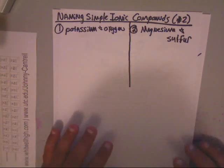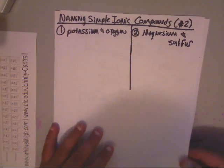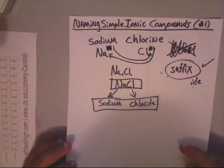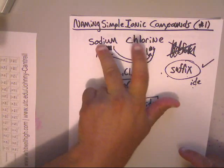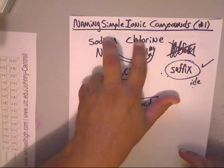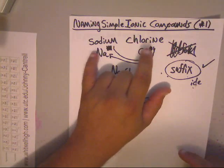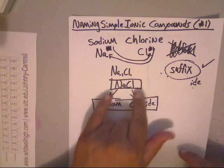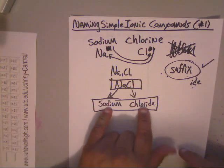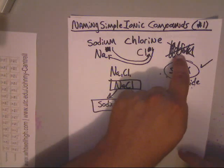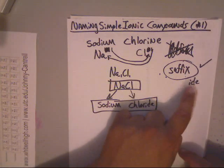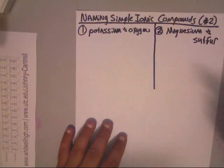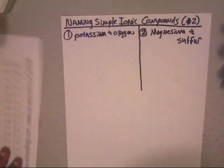All right, we're ready for our second video. In the first video, I did something really simple. I showed you how to name, taking the two elements sodium and chlorine, and make them ionic compounds. I showed you their ions and how they form the formula NaCl, and I showed you how you name those. I explained to you that prefixes are not used, but the suffix is used, the -ide. Okay, now here's the second one.